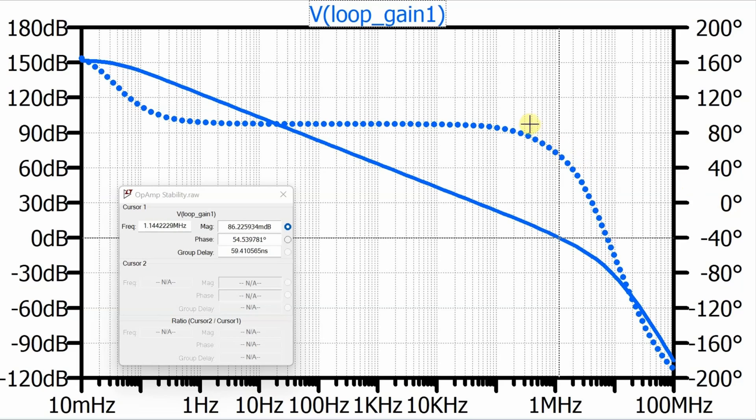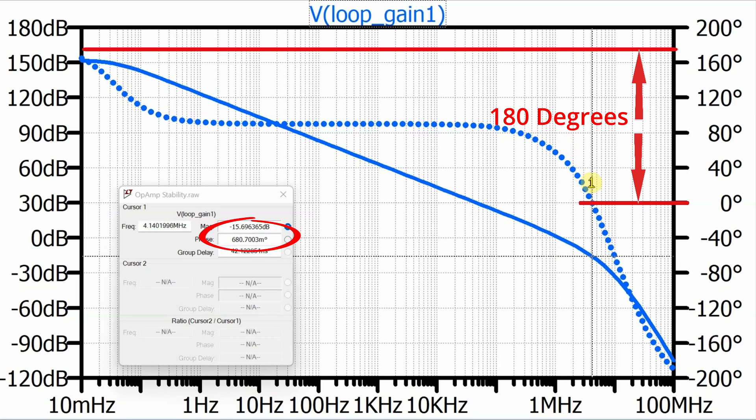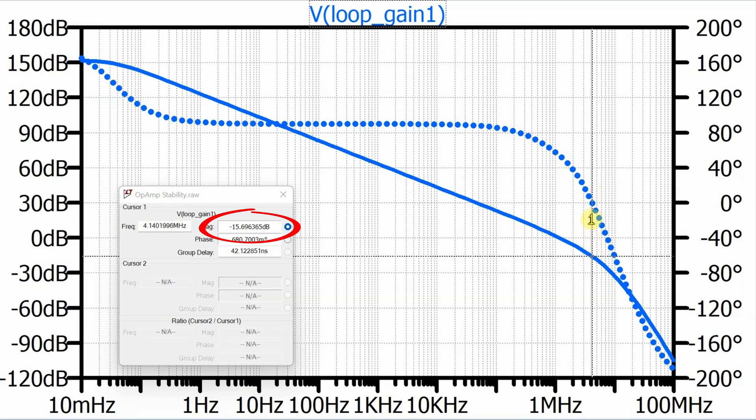Let's go back to the Bode plot of our circuit and figure out what the gain margin would be. Well, we already have our cursors up. So what we can do is take our cursor down to where the phase is zero degrees. So this will be a full 180 degree shift from DC. And then we can look at the magnitude and the magnitude is negative 15.69 decibels. So this means we're 15.69 decibels below zero dB. And that is our gain margin. Our gain margin is 15.69 dB.